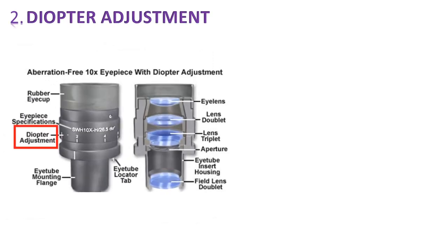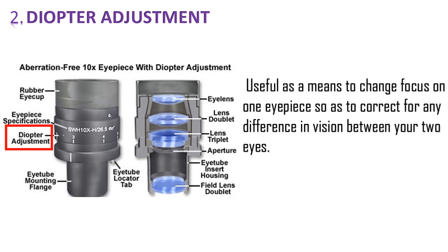And number 2 is diopter adjustment. So it is useful as a means to change the focus on one eyepiece so as to correct for any difference in vision between your two eyes. If you look through two eyes, if there's a blurring in the image or some sort of clarity problems, we can adjust it by adjusting the diopter of the eyepiece lens. So this is the importance of diopter adjustment.